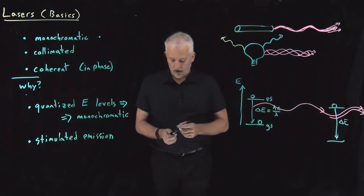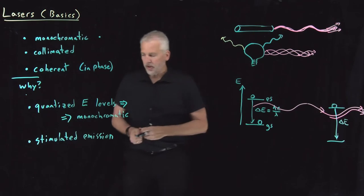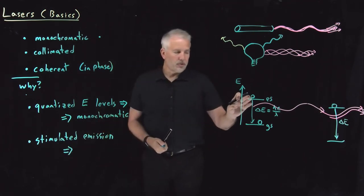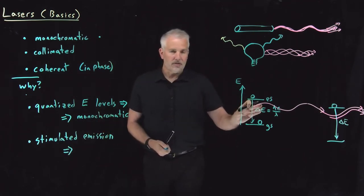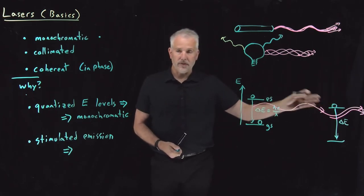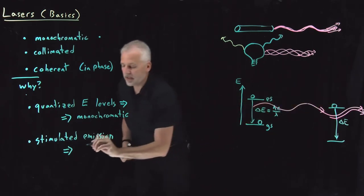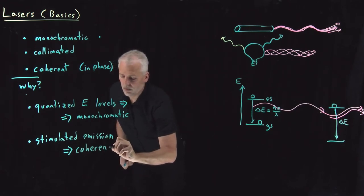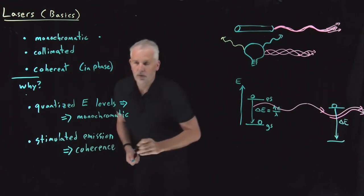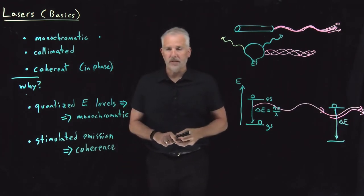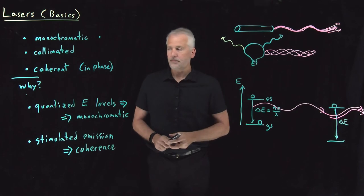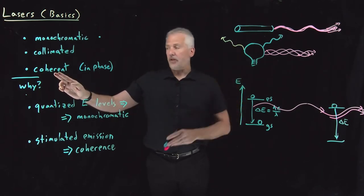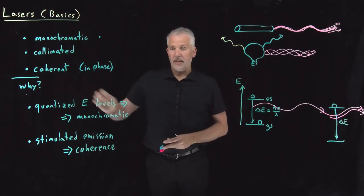That new photon gets emitted coherently — with the same phase as the photon that stimulated the emission. So when we have stimulated emission, excited-state molecules give off photons that stimulate emission of more photons of exactly the same frequency, and those photons will be coherent with one another, having the same phase. That's the method used to generate coherent light in a laser.